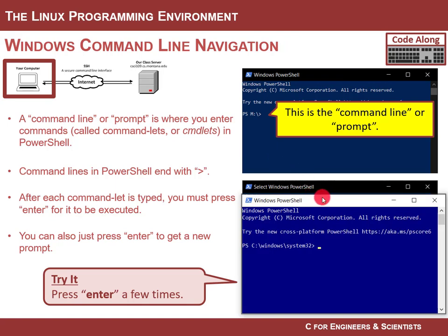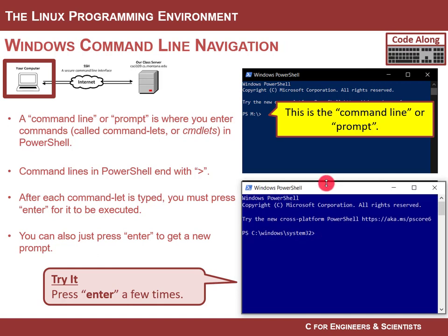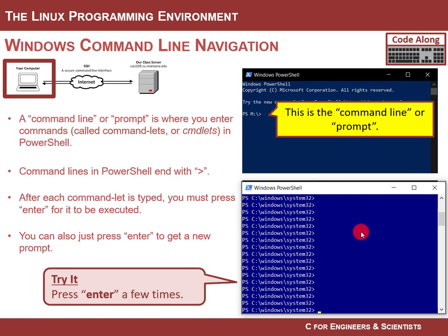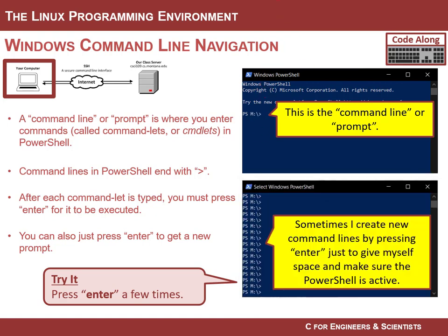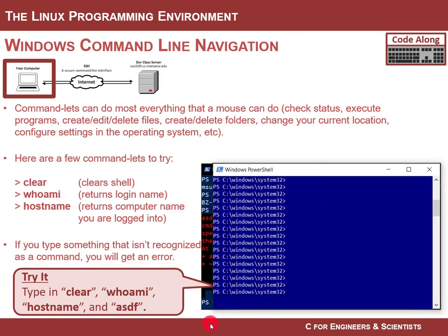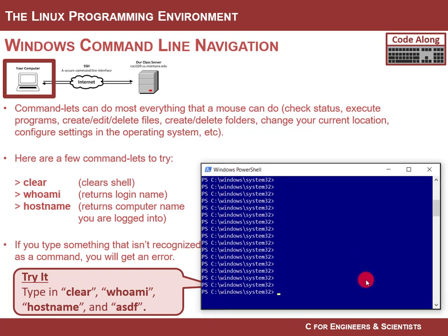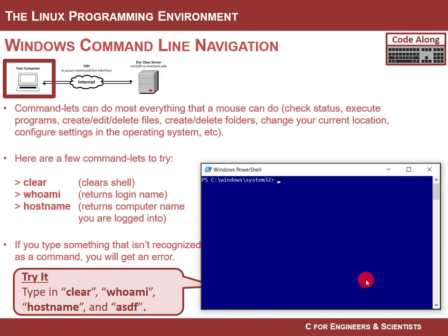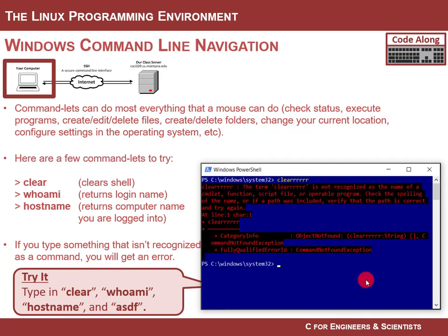All you do is type commands into this window and it does stuff. When you hit Return you get a command line prompt — the greater-than symbol is the prompt in Windows where you type a command. If you type a command Windows doesn't recognize, it'll throw back an error. A simple first command is 'clear', which clears the screen — you type it and hit Return and it clears the screen.